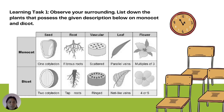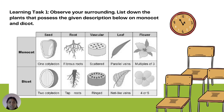Learning Task 1. Observe your surroundings and list down the plants that possess the given descriptions for monocot and dicot. For monocot: seed — one cotyledon; root — fibrous roots; vascular — scattered; leaf — parallel veins; and flowers — multiples of three. For dicot: seed — two cotyledons; root — tap roots; vascular — ring arrangement; leaf — net-like veins; and flower — four or five petals.